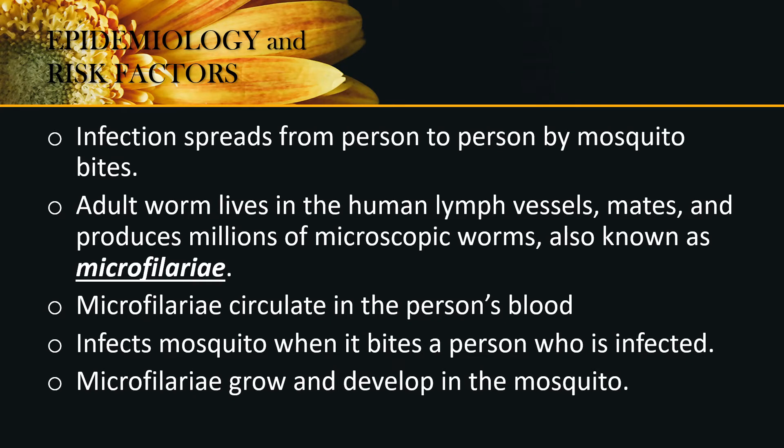Infection spreads from person to person through mosquito bites. The adult worm lives in the human lymph vessels, mates, and produces millions of microscopic worms, also known as microfilariae. Microfilariae circulate in the person's blood and infect the mosquito when it bites an infected person. The microfilariae grow and develop in the mosquito.